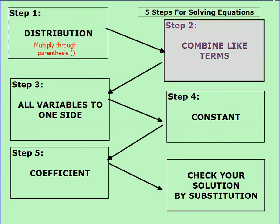Step number two deals with combining like terms. A lot of students misinterpret this step — they think that every like term throughout the entire equation can be combined, and that's not the case. This step requires that we isolate the left side of the equation from the right side. The dividing line between the two will be the equal sign. So we're looking for like terms to the left of the equal sign that can be combined, and separately looking for like terms on the right side.